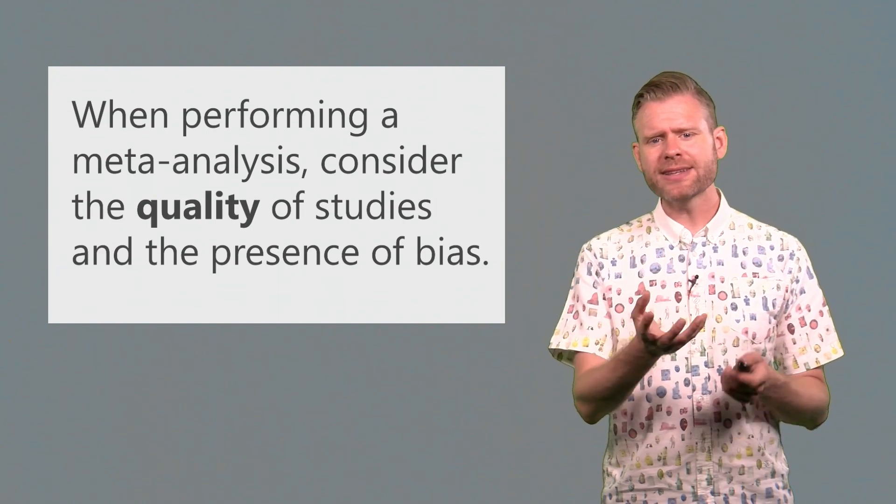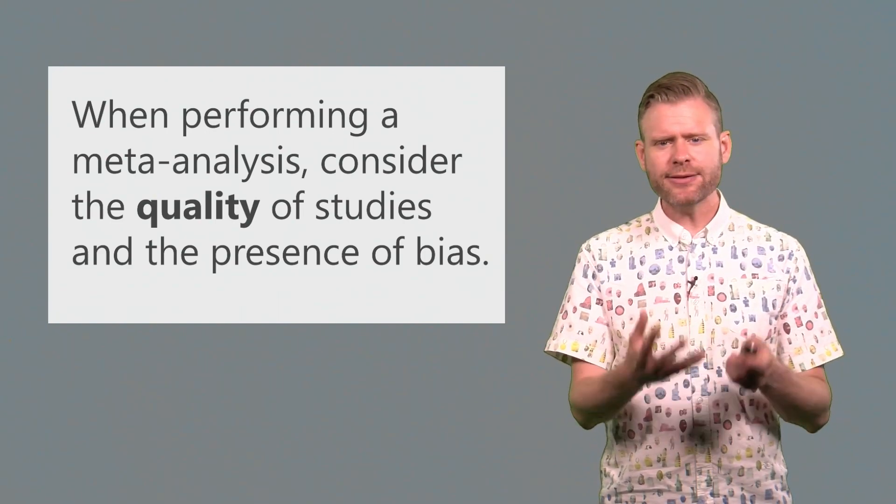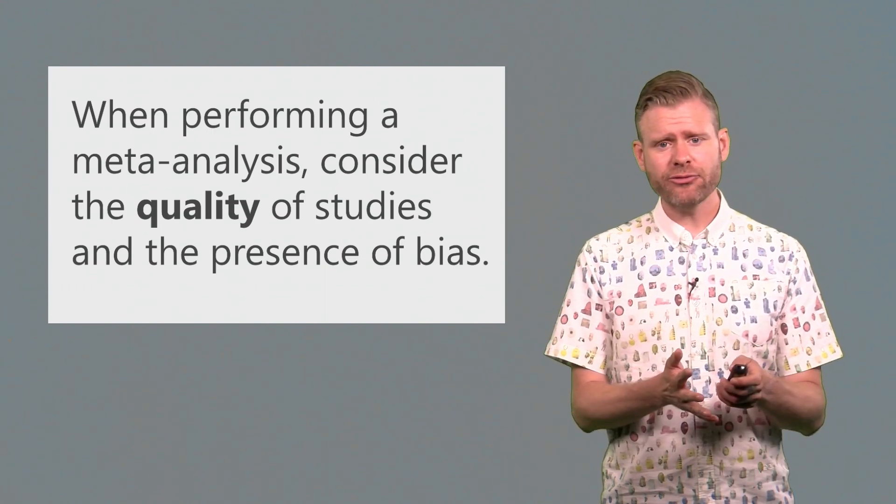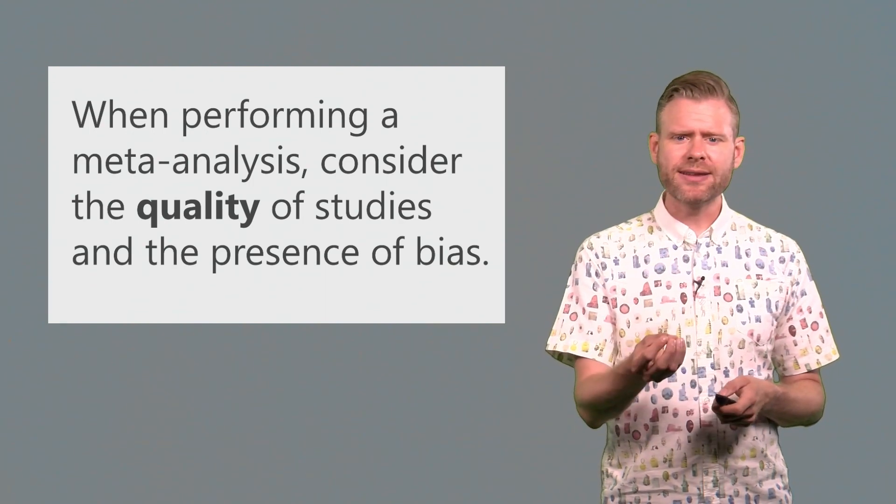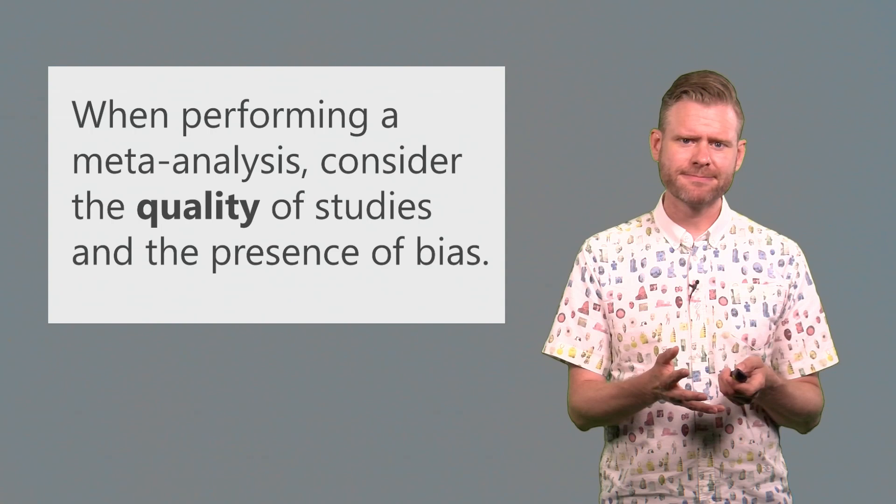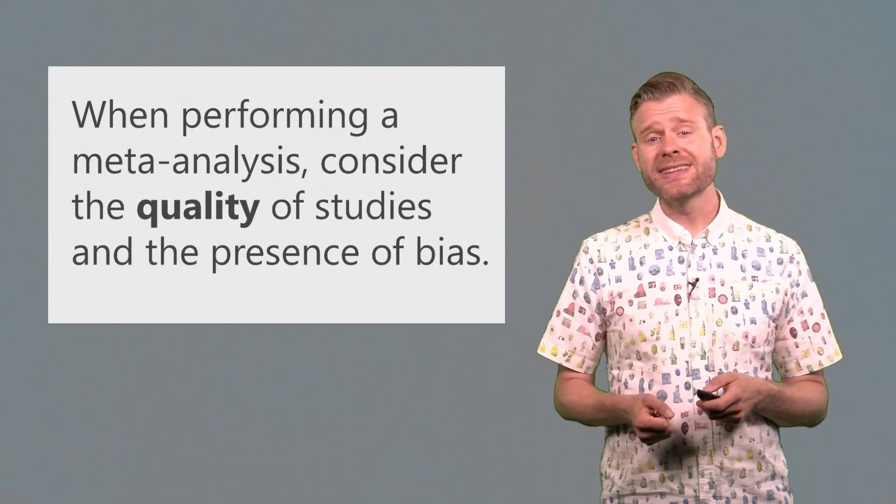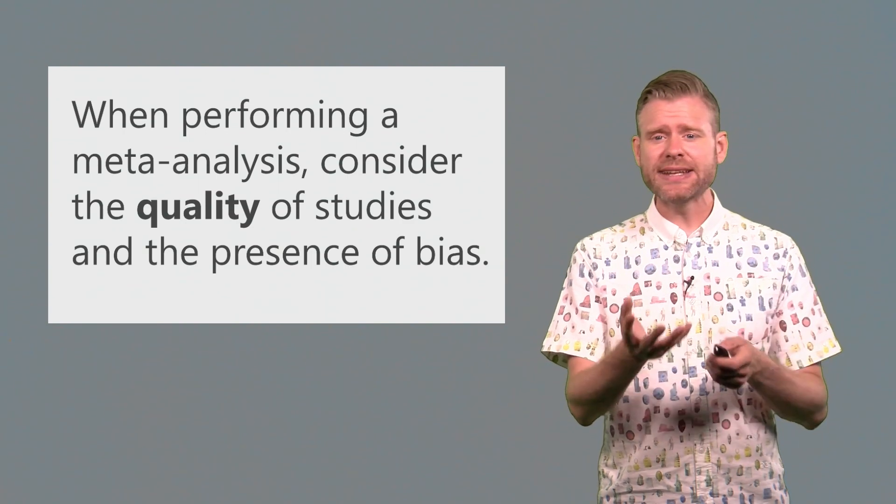When we perform a meta-analysis, we weigh the effect sizes that were observed in each individual study by the sample size. We don't just calculate an average over all the studies that are performed, but we give more weight to larger studies because these effect sizes are more accurate. So in other fields, they use quality as another way to weigh each individual study. If we think a study is very low quality, we want our effect size estimate in the meta-analysis to be less influenced by this particular data point.